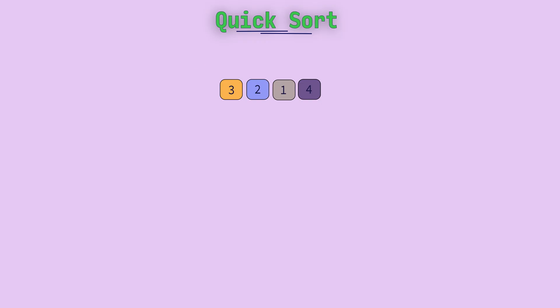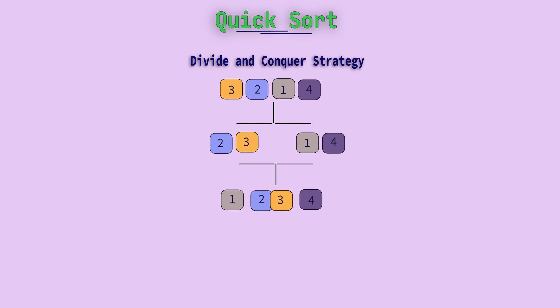So basically, QuickSort works on a divide and conquer strategy, which means this algorithm divides the given unsorted array recursively, then it sorts every unsorted fragment among them, and finally it combines all the sorted fragments and gives the result, that is one final sorted array.